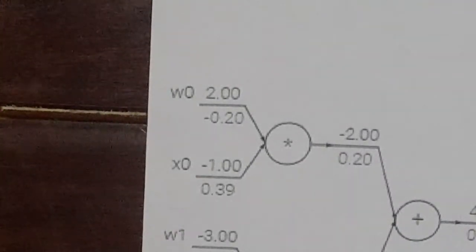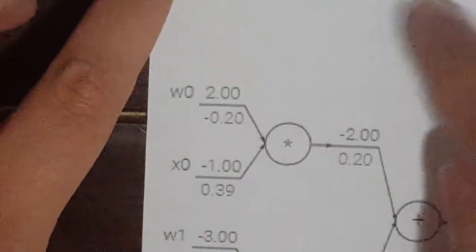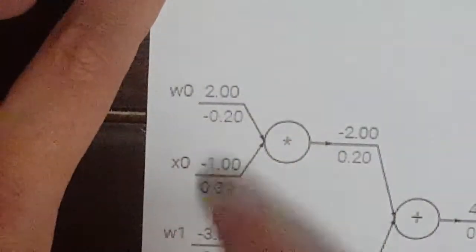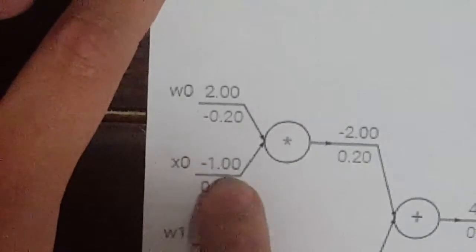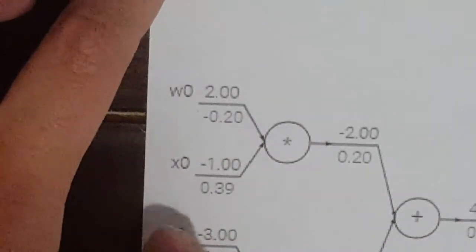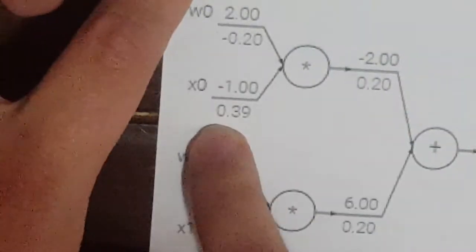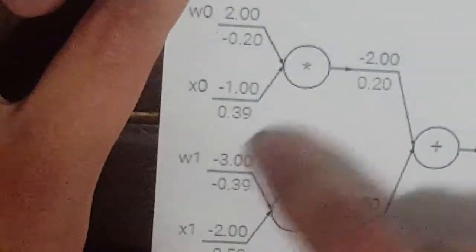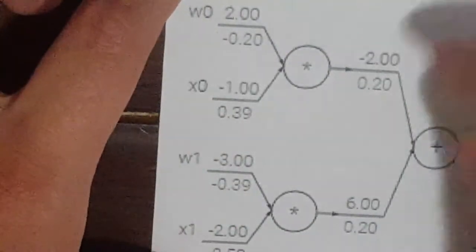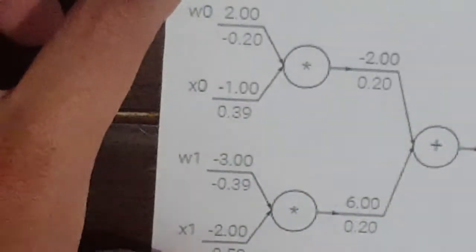Now we have an x times y gate. To find the partial derivative with respect to x, it's going to be y. We multiply by our previous derivative — so -1 times 0.2 — and we get... evaluating the local derivative and multiplying by weight 0, which is 2, then multiplying by 0.2, we get 0.4. The 0.39 shown is likely a rounding error.